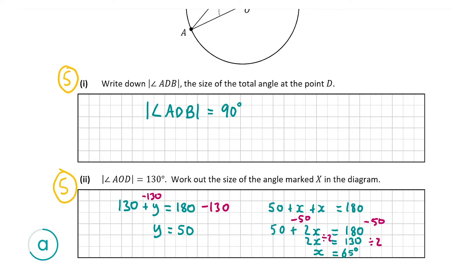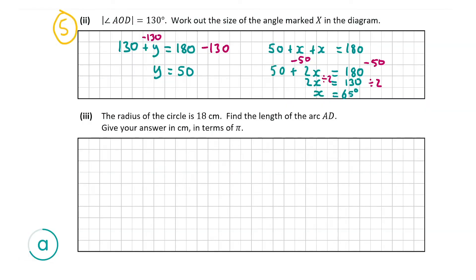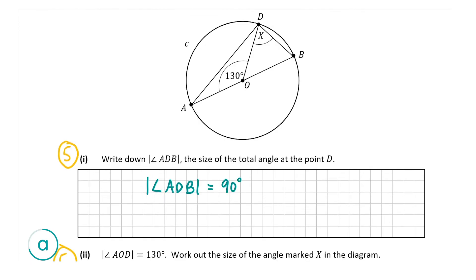Now let's look at A part 3. We're told the radius of the circle is 18 centimetres and we have to find the length of arc AD, giving our answer in centimetres in terms of pi. The length of arc AD is the arc shown here. The question didn't specify the minor arc or the major arc, so full marks were given for either. I'm going to find the minor arc as that's the one intended.